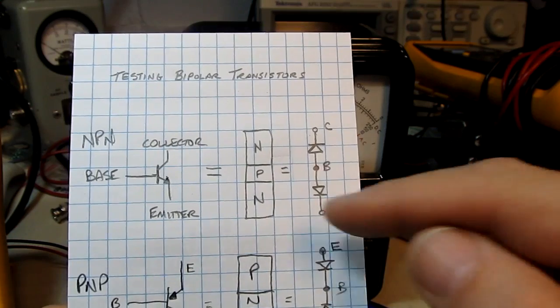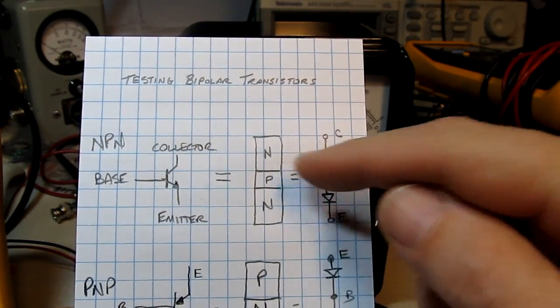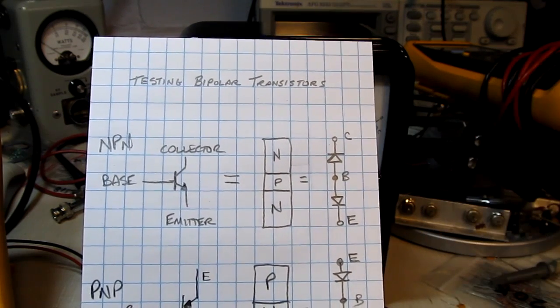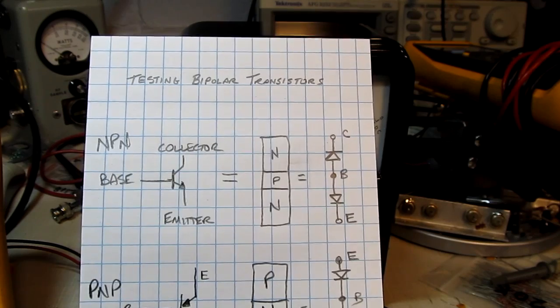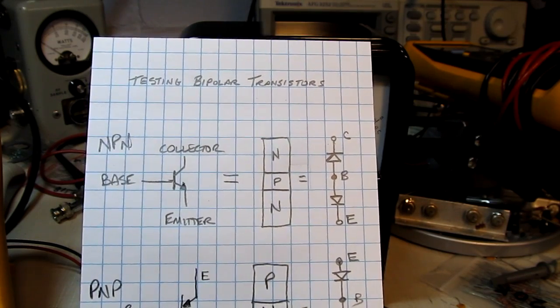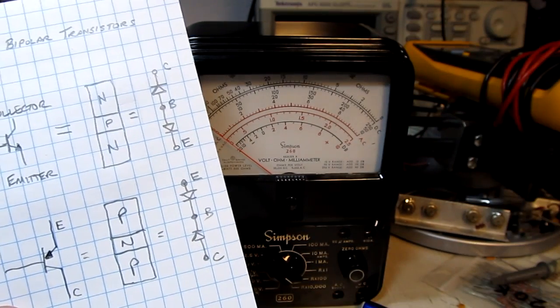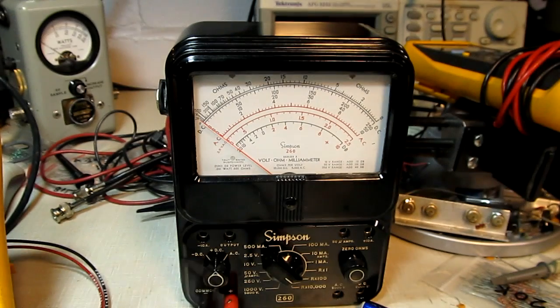So the basic testing procedure is just to ensure that each of the PN junctions behaves like a diode conducts in one direction and doesn't conduct in the other. Before widespread proliferation of digital multimeters we used analog multimeters like this one and if you've got one of these you can certainly use that so let's show you how.